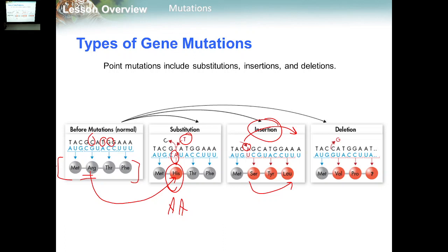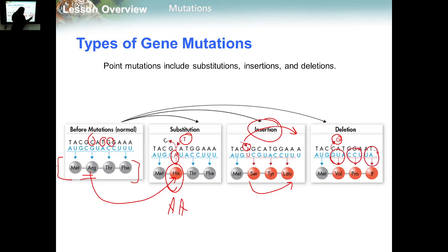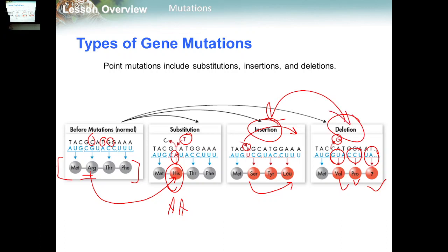For deletion, we remove a nucleotide — for example, removing G from the sequence. This causes the loss of a nucleotide needed for arginine, and new codons appear which code for new amino acids. Insertion and deletion both have huge effects on the gene.